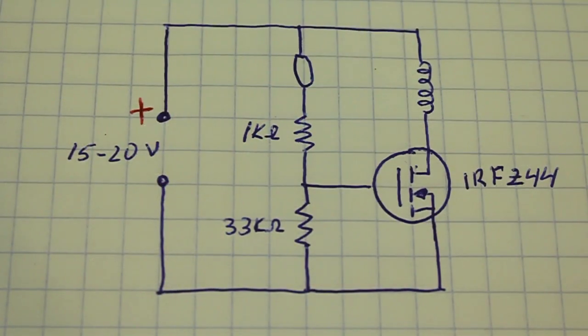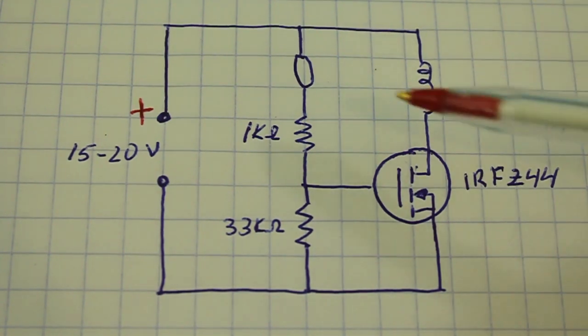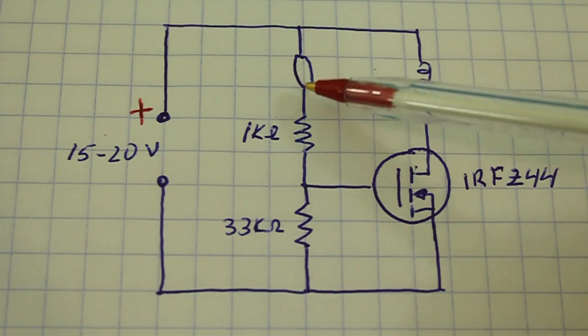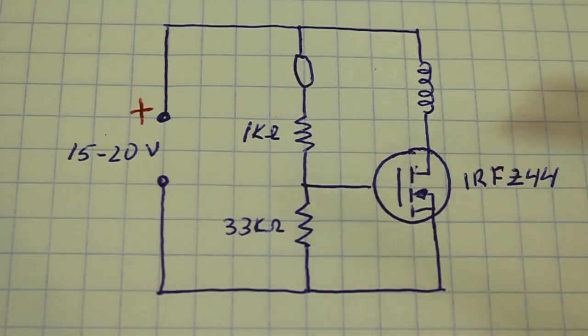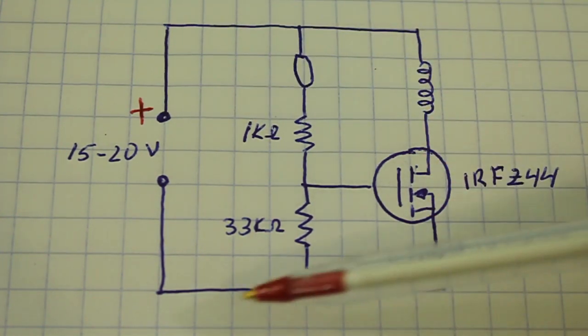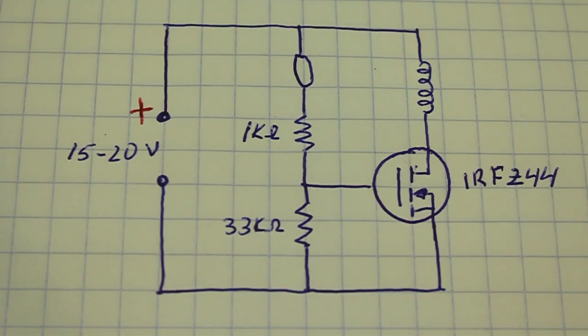This is the circuit. When a magnet is close to the reed switch the current can flow through the switch and opens the gate of the MOSFET. Then the current can flow from positive through the coils and the MOSFET and back to the negative of the power supply.